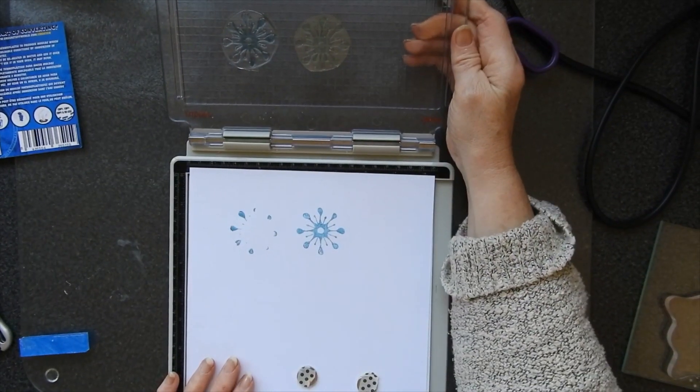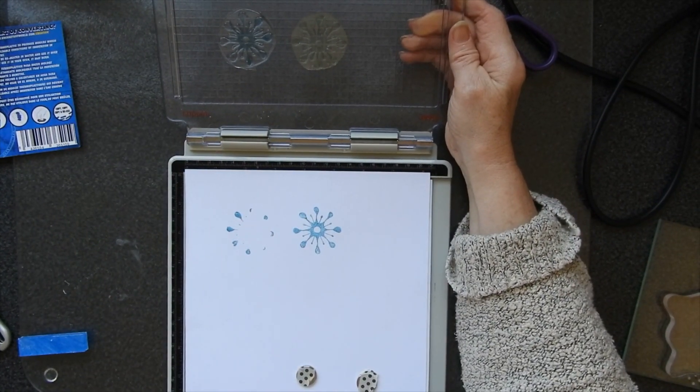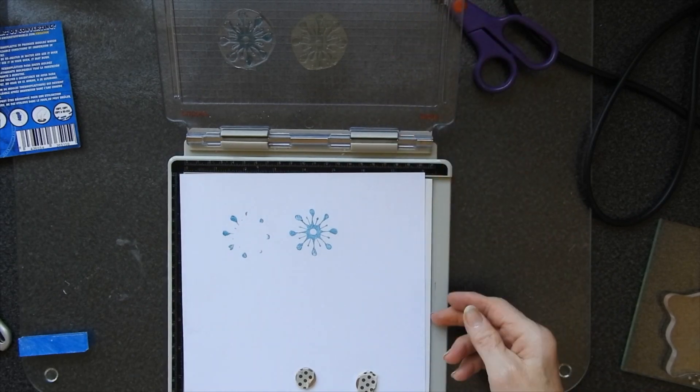So here's the result and it becomes blatantly obvious that I didn't have a level stamp. So take two.